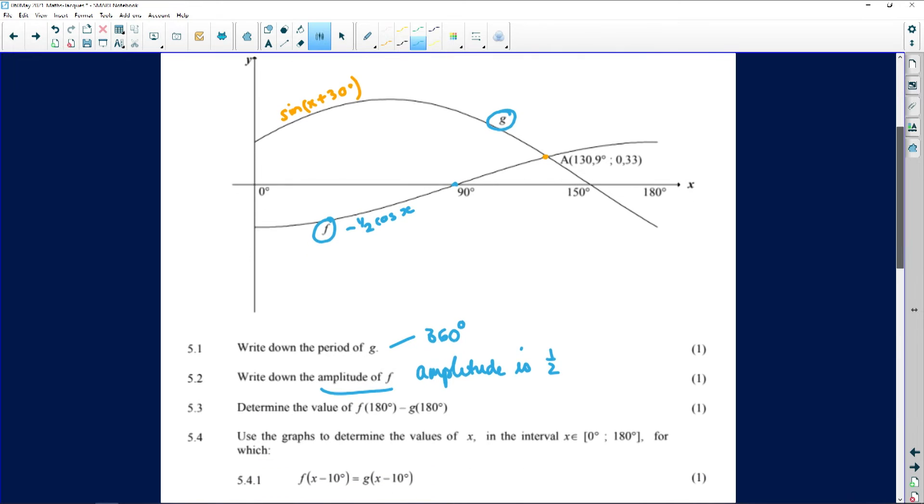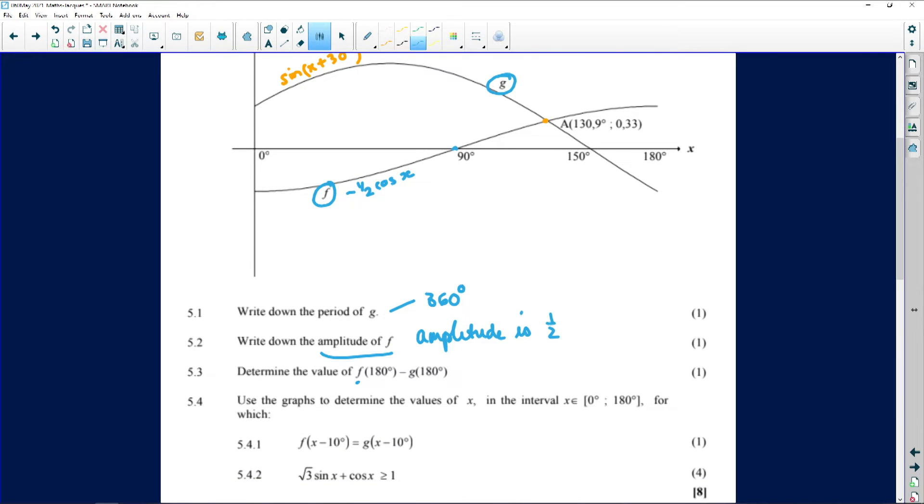You've got two marks earned. So let's see the next one. The next one they say find f of 180 and subtract from that 180 substituted into g. Now 180 lies over here.